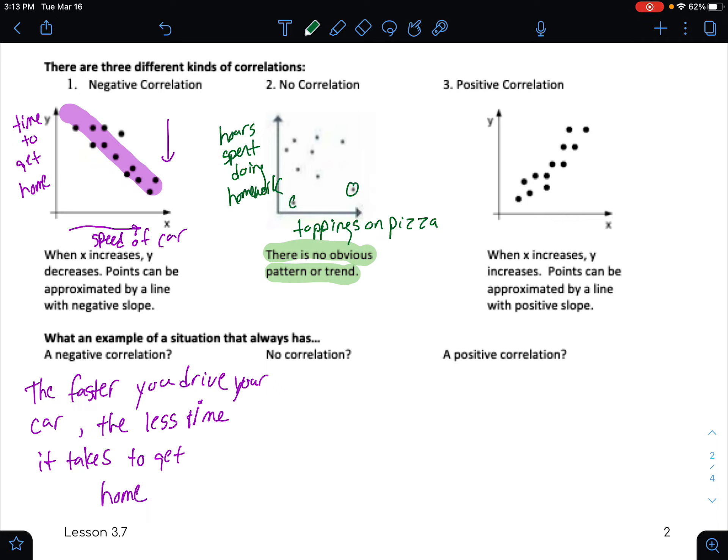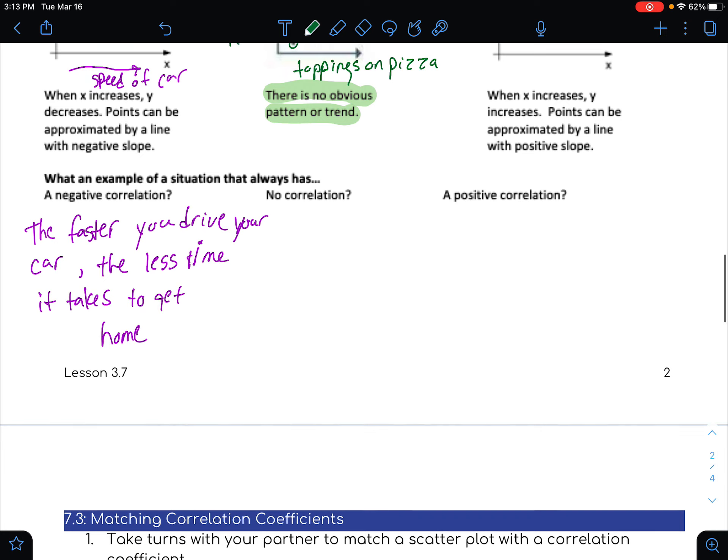Is there a connection between the toppings on your pizza and the hours spent homework? So if each one of these is a student who has a certain number of toppings that they like on their pizza and how many hours they spent doing homework, you'd be like, how are those even connected? They're not. That's the whole point.